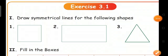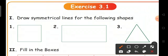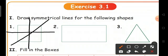Now next, Exercise 3.1. Draw symmetrical lines for the following shapes. First one, square. We have already drawn symmetrical lines for these images. For a square, four symmetrical lines can be drawn. One, two, three and four.